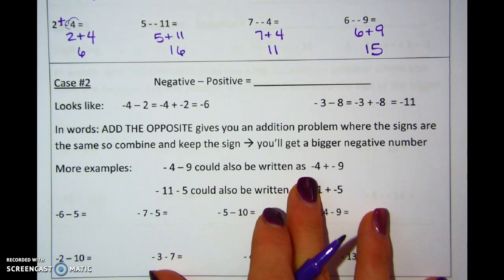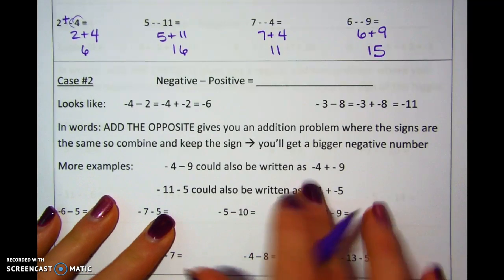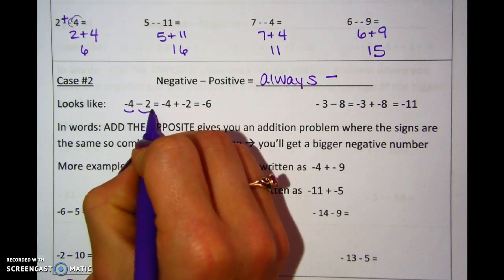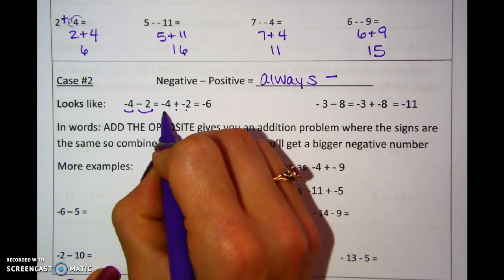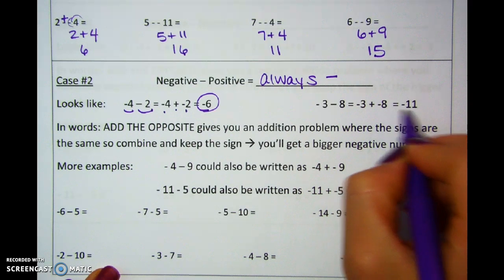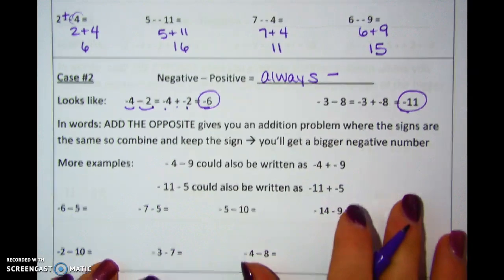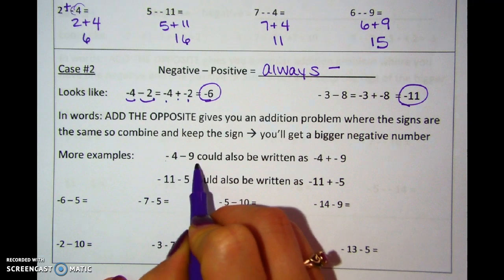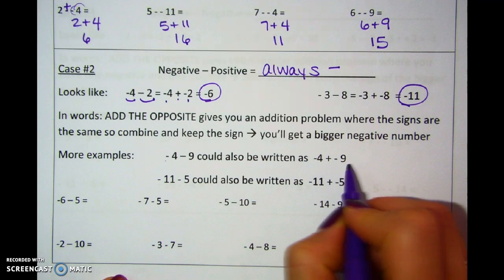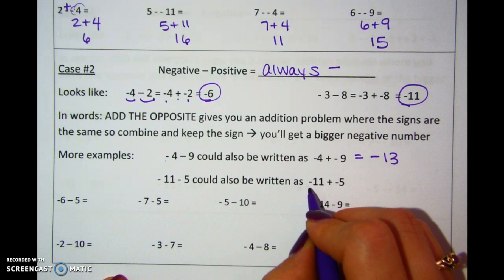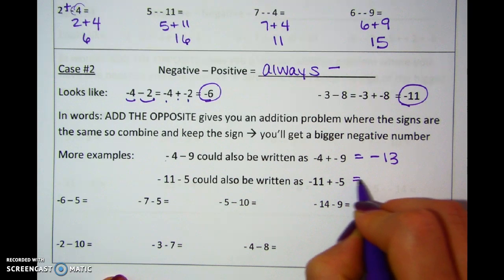The next type, case two, is a negative minus a positive — those answers are always negative. If I add the opposite, I have a negative plus another negative, so I get a bigger negative answer. Negative three minus eight: I'm at negative three, putting eight more negatives with it — those combine to make 11 negatives. Negative four minus nine can be written as negative four plus negative nine, combining to make 13 negatives. Negative 11 minus five can be written as negative 11 plus negative five — add the opposite — and those combine to make 16 negatives.